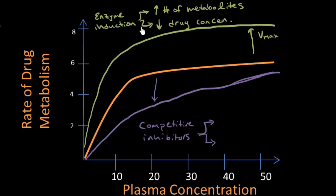Let's write competitive inhibitors and see what the two consequences are. With enzyme inducers, we saw if I'm increasing the rate of metabolism, I'm going to make more metabolites.